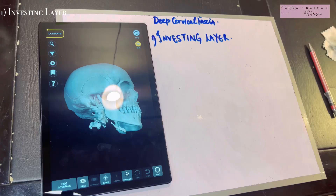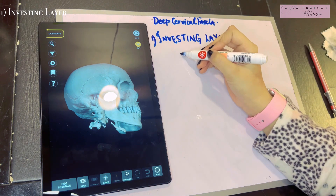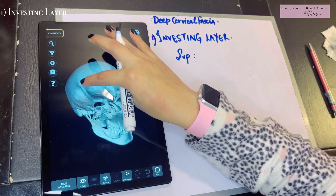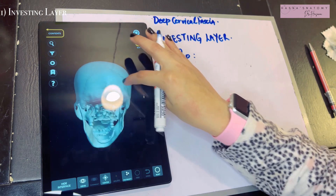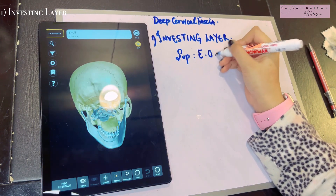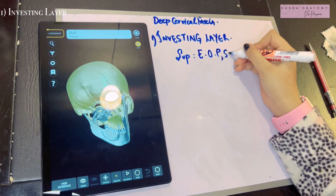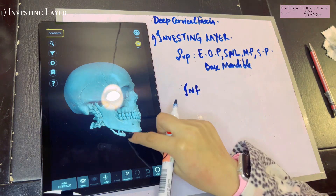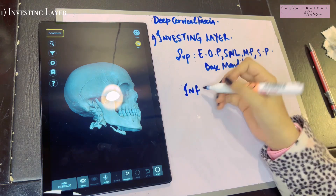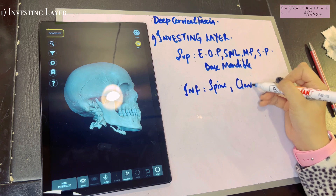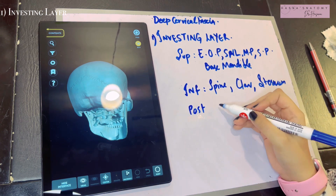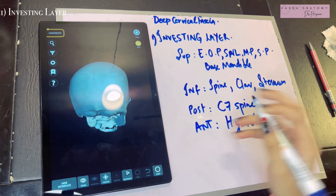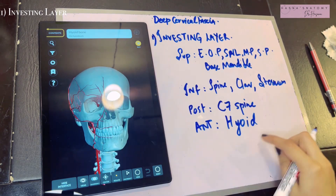Now let's talk about the attachments of the investing layer. Superiorly, it goes up to the lower border of the skull. Starting posteriorly: the external occipital protuberance, then the superior nuchal lines, then the styloid process, the mastoid process, and finally the base of the mandible. Inferiorly, it goes down to the lower part of the neck: the spine of the scapula, the clavicles, and the sternum. The posterior attachment is to the C7 spine, whereas anteriorly it attaches to the hyoid bone.